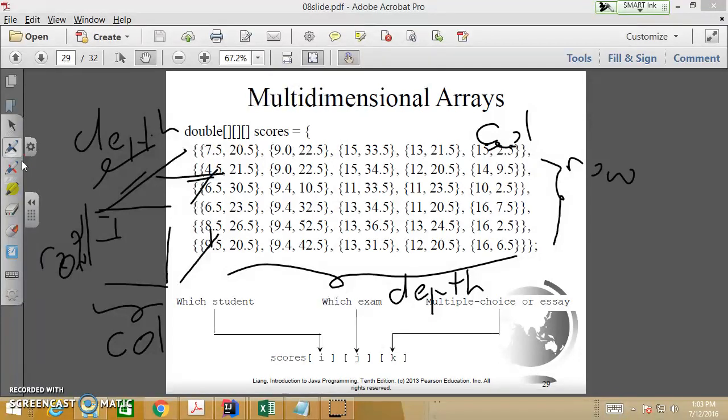So the first set of data is what? Actually, this is two depth, right? No, 1, 2, 3, 4, 5, right? 5 depth, right?